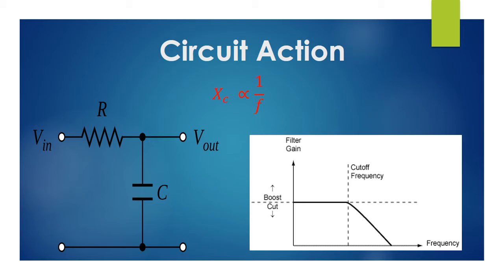We apply signals of different frequencies. When the frequency is low, the capacitive reactance is high — XC is inversely proportional to F, so low frequency gives high XC. When the capacitive reactance is high, the maximum voltage drop is across the capacitor, meaning maximum signal appears at the output taken across the capacitor.